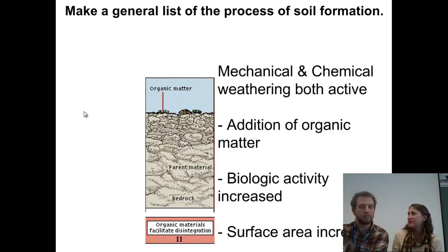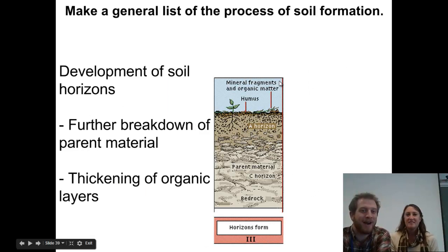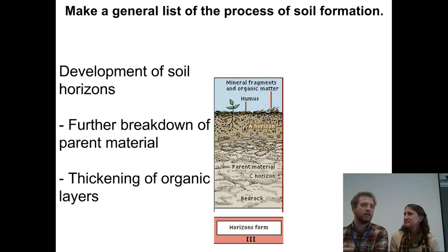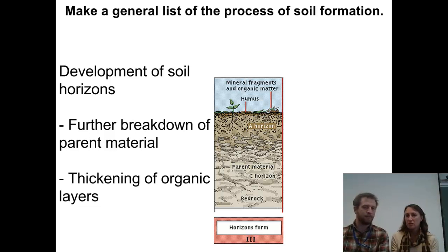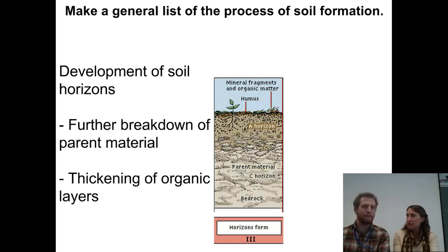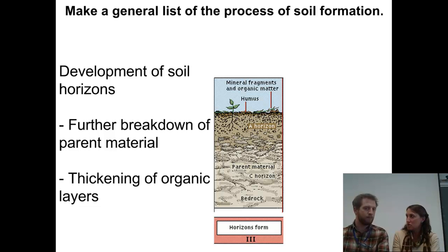Coming back a few thousand years later, we're actually making something that looks more like soil. We're developing soil horizons. We've added organic matter from the breakdown of lichens and mosses, and then we start getting bigger plants — just a little shrub — growing there. The roots push down into the soil and rock, wedging and breaking it apart, which is more mechanical weathering. That allows more water to soak in and leach the metals out of the soil, carrying them downwards until they hit solid bedrock.